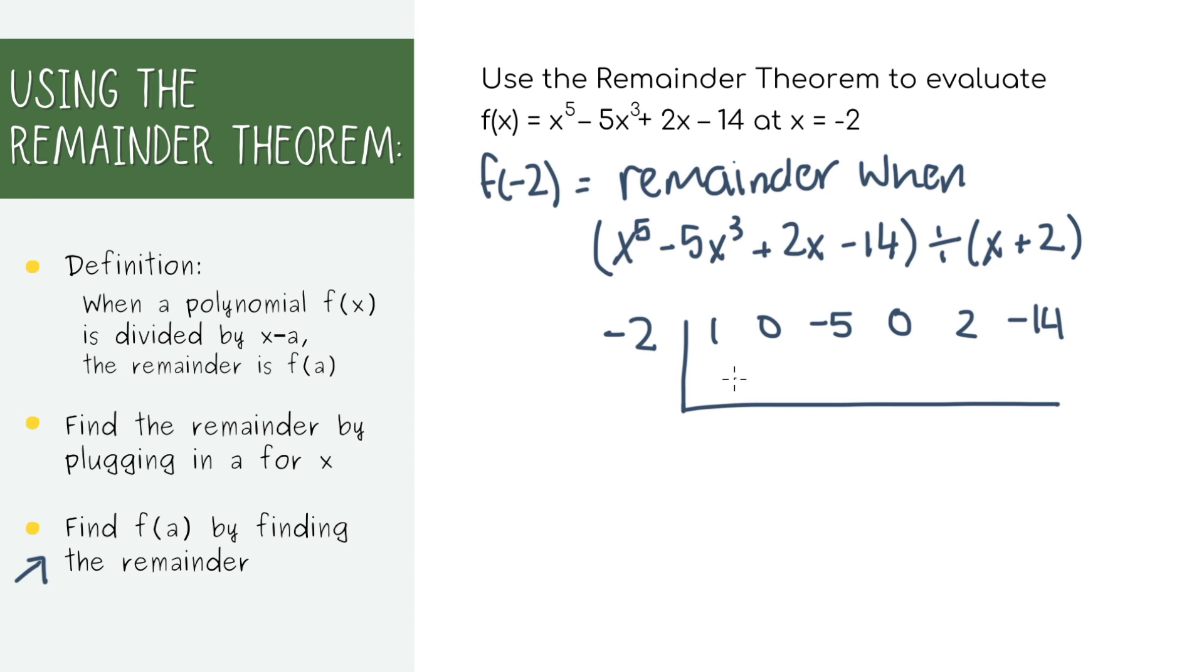Let's use synthetic division to divide and eventually find the remainder. If you don't know how, you can also check out my previous video on how to divide polynomials. And now that we've divided, we have a remainder, which is negative 10. Because of the remainder theorem, we know that this is also equal to this polynomial evaluated at x equals negative 2.